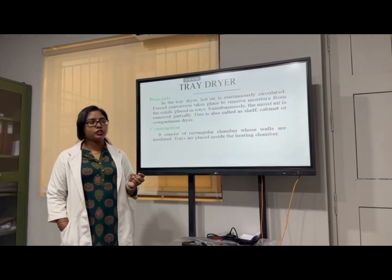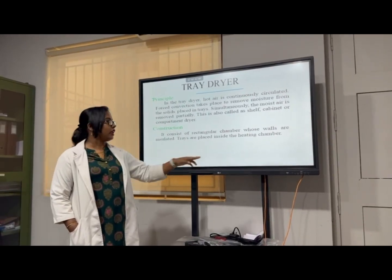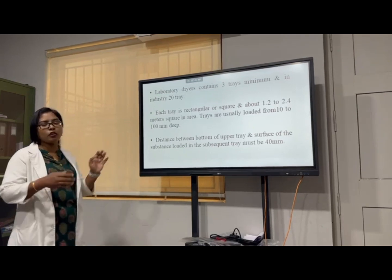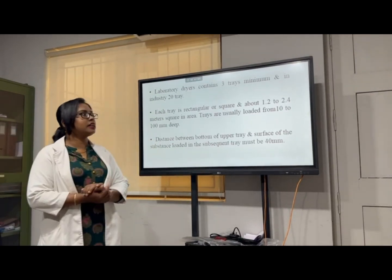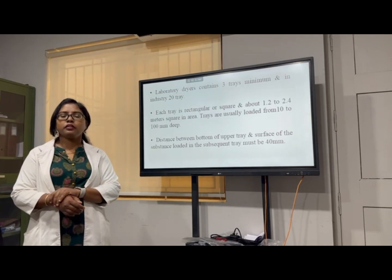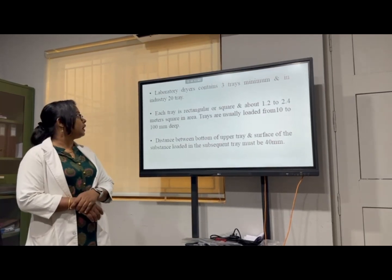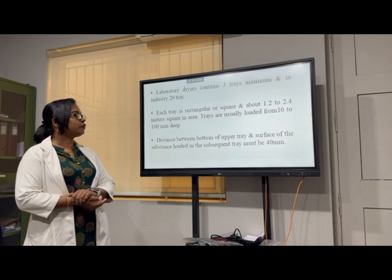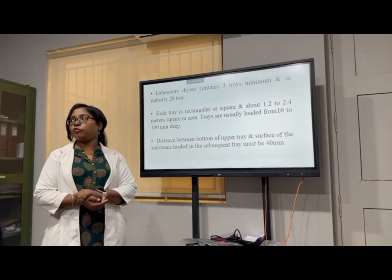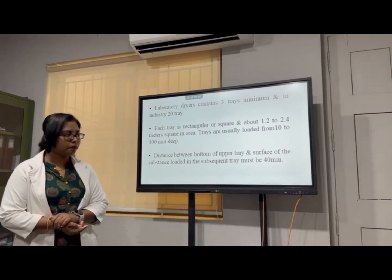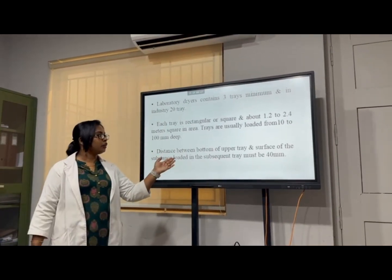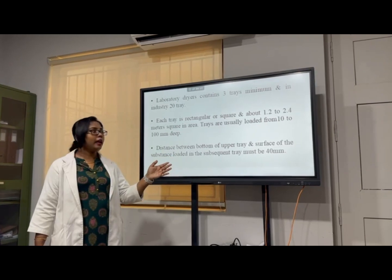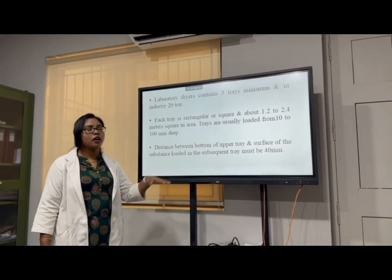It consists of the rectangular chamber whose walls are insulated and their trays are placed inside the heating chamber. Here, in the laboratory, there are three trays minimum. In industries, more than 20 or 30 trays are there. Each tray is rectangular or square type, about 1.22 to 2.4 meters square in area. The trays are loaded 10 to 100 mm deep. Here, the distance between the bottom of the upper tray and the surface of the substance loaded in the subsequent tray, minimum it must be the distance is 40 mm.